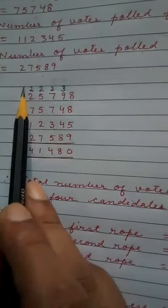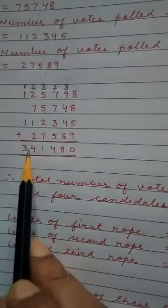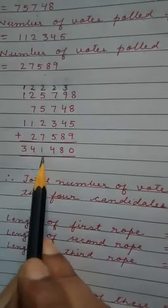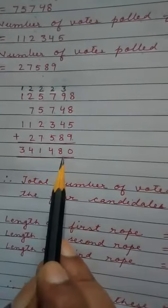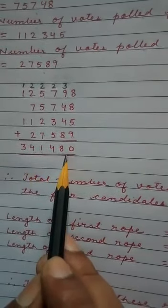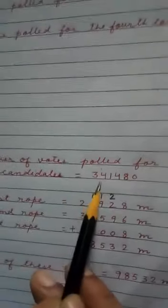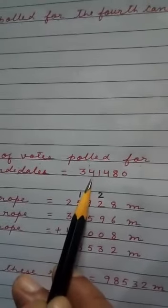So 2 plus 2, 4, 4 plus 7, 11, 11 plus 1, 12, 12 plus 2, 14. 4 here and this one you write here. So 1 plus 1, 2. 2 plus 1, 3. So what you will get here? 3,41,480. Therefore total number of votes polled for the four candidates, 3,41,480.